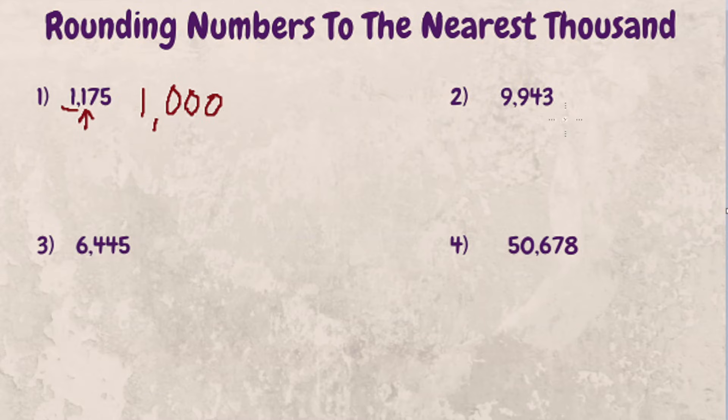Example two, nine thousand nine hundred and forty-three. What we're trying to accomplish is, is this number closer to nine thousand or is it closer to ten thousand?